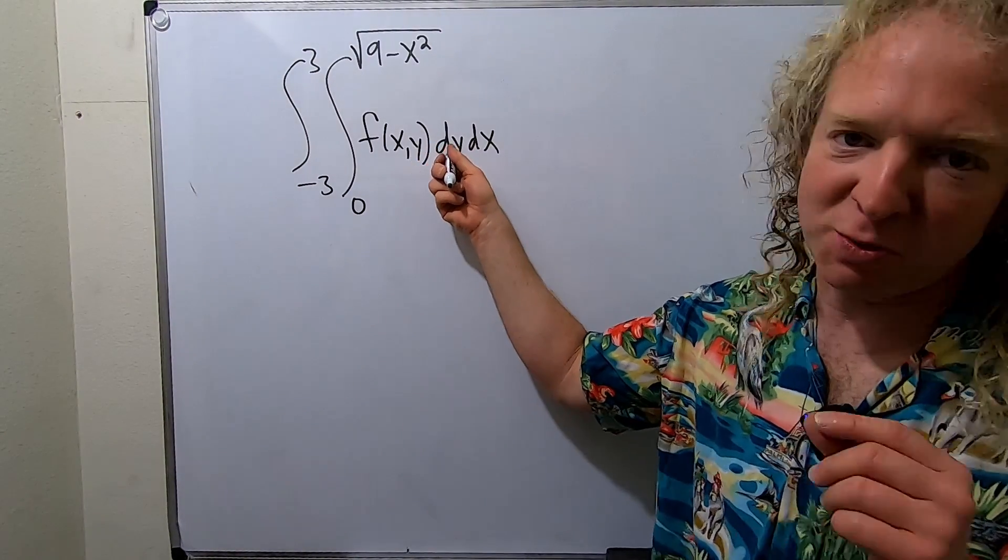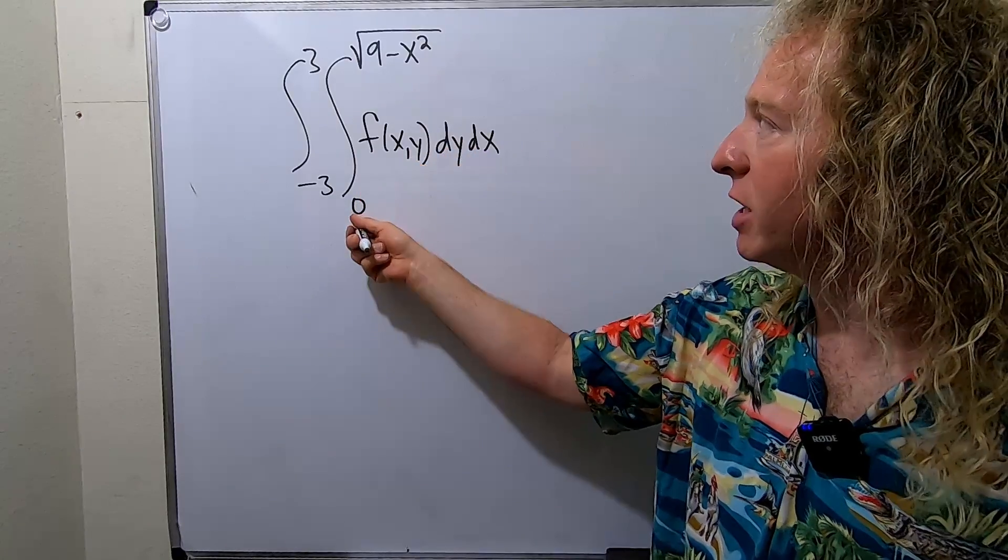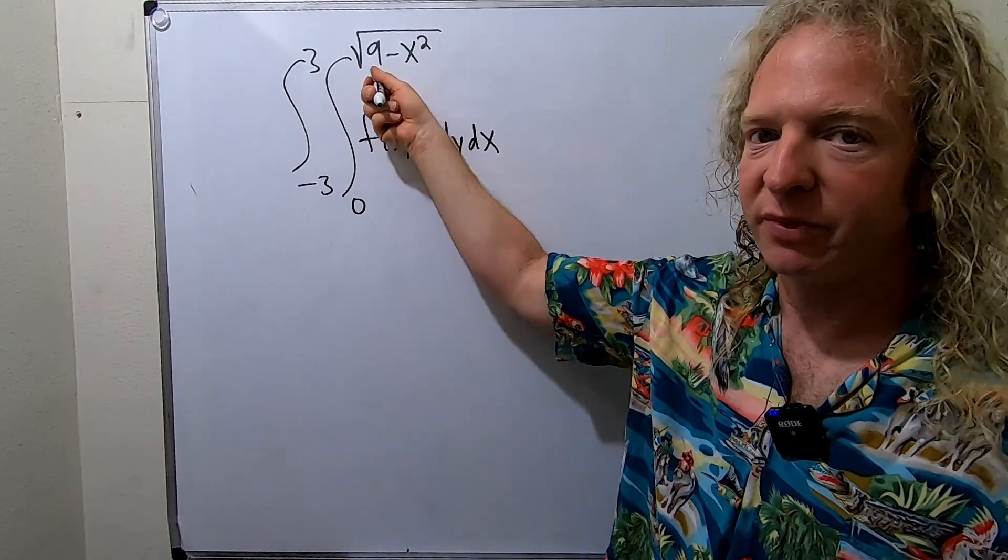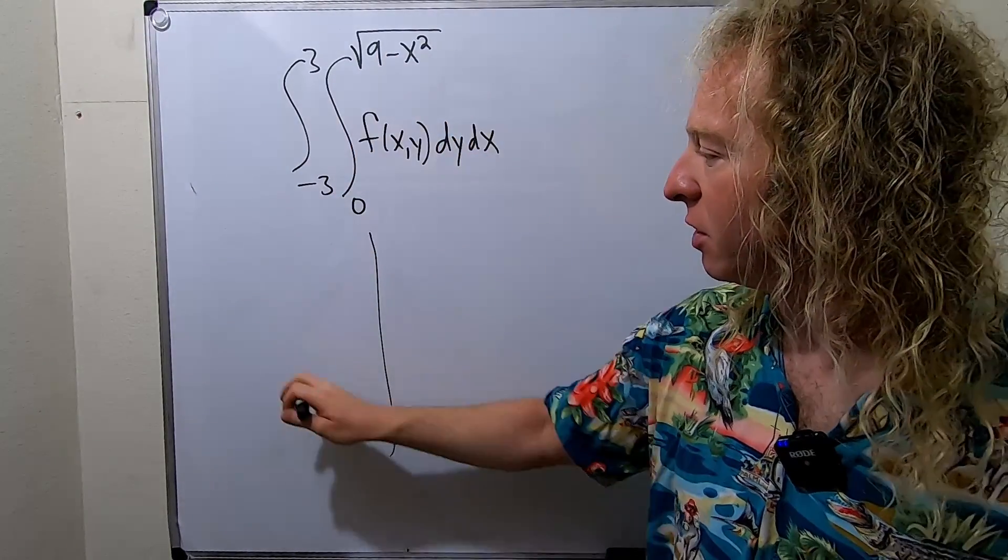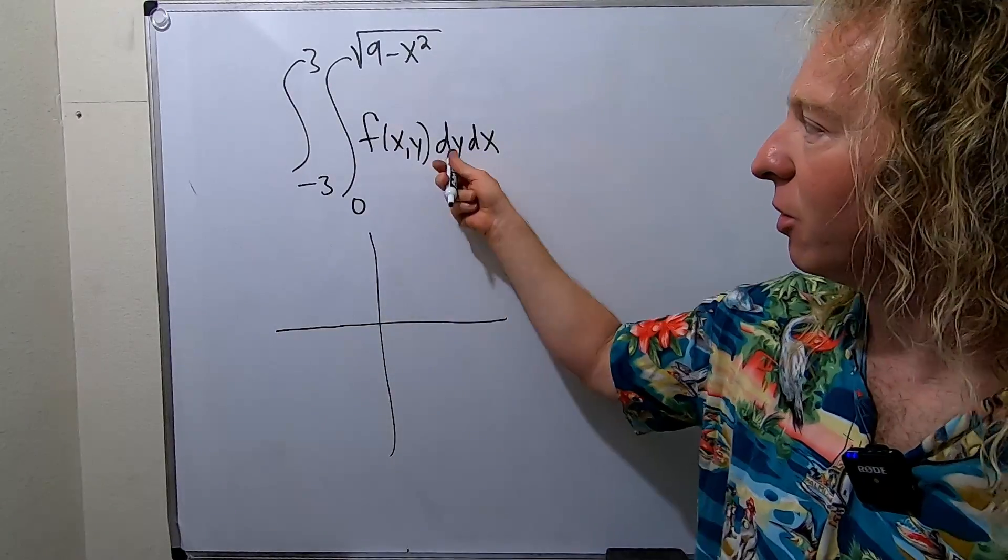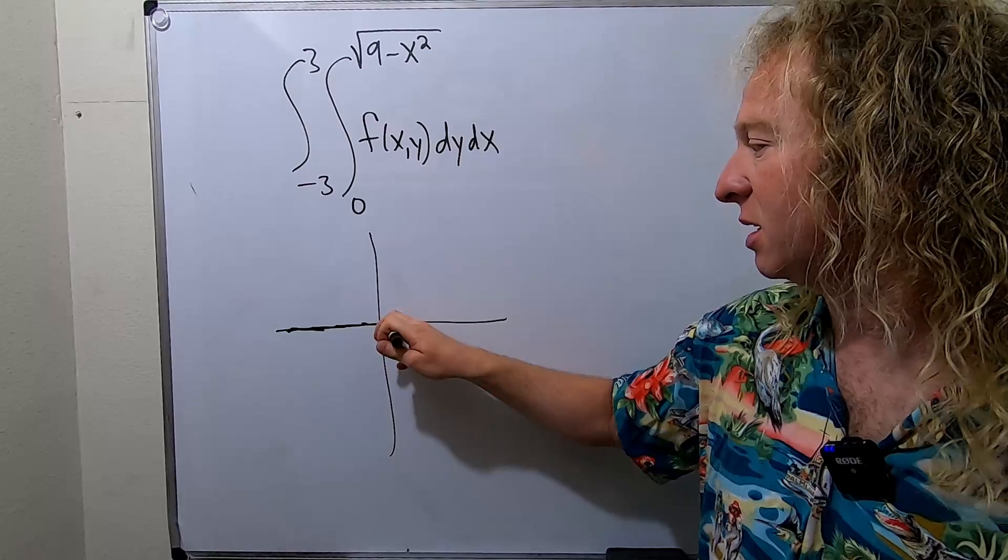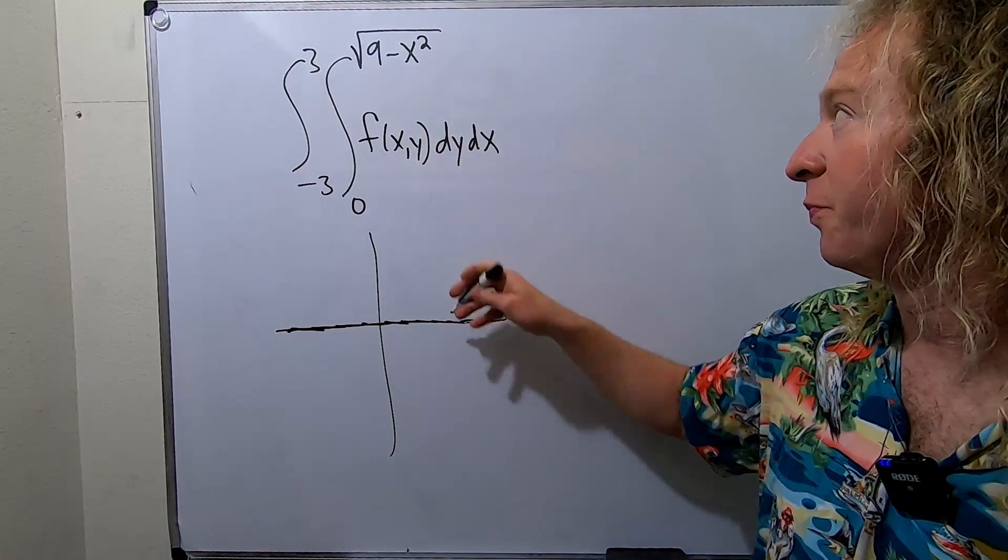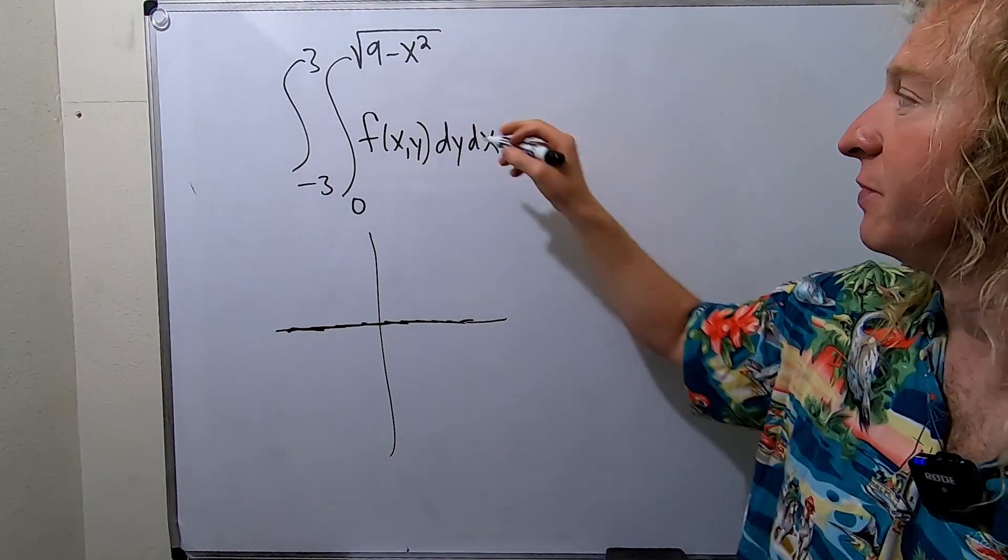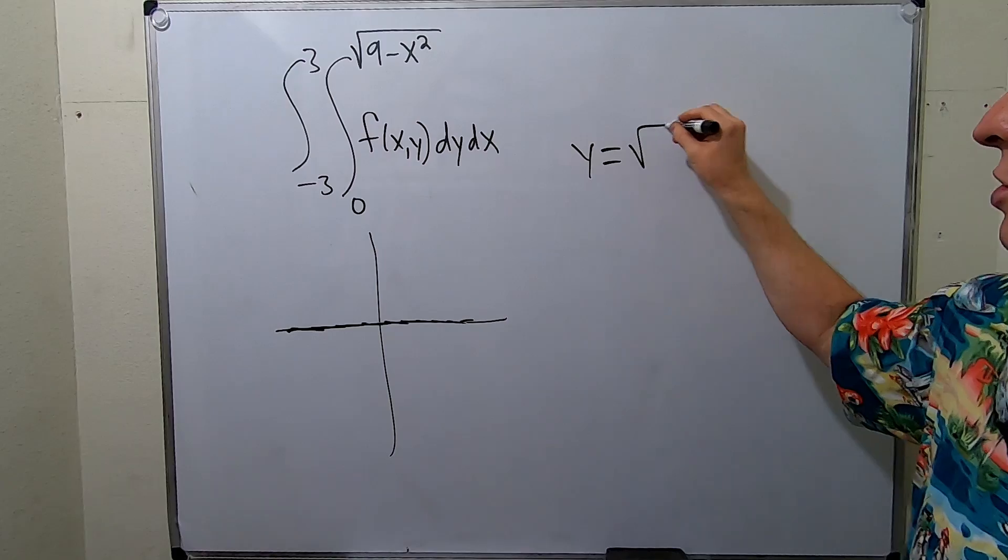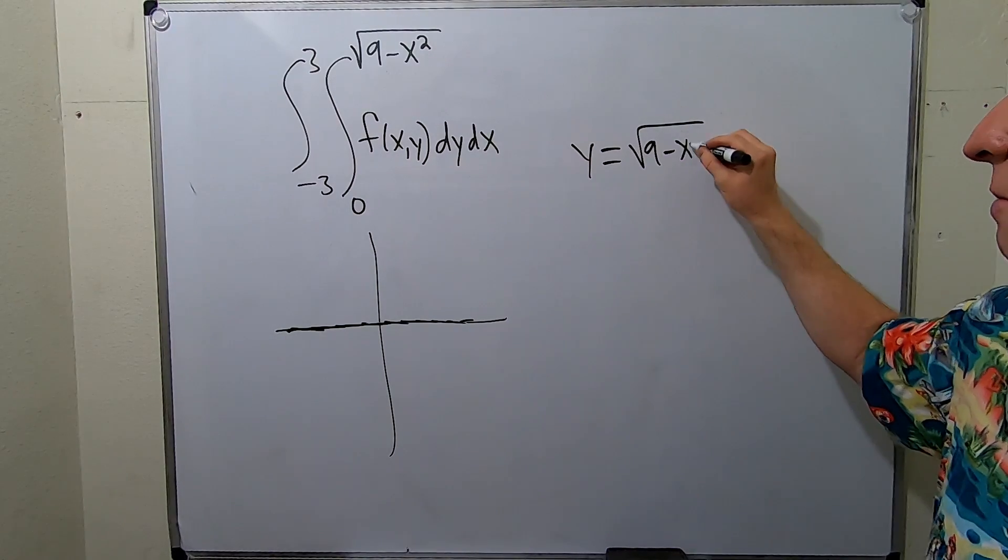First we're integrating with respect to y, going from y equals 0 to y equals this. So let's draw a little picture. Y equals 0 is a horizontal line, basically the x-axis. And then we have y equals the square root of 9 minus x squared. What is that?